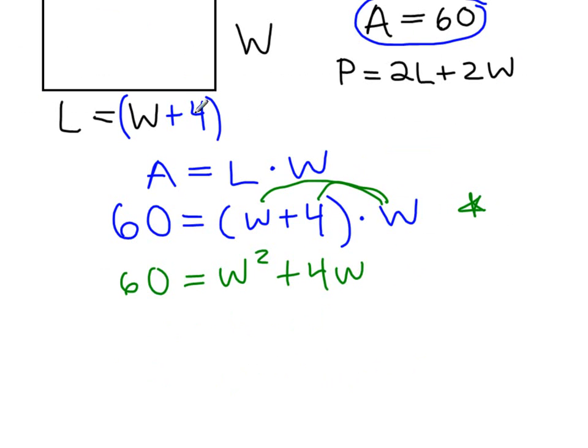Got to get it equal to 0. So what I do to one side of the equation, I have to do the other. I'm going to subtract 60 from both sides. And now I'm left with a quadratic equation in which 0 equals W squared plus 4W minus 60. Great start.